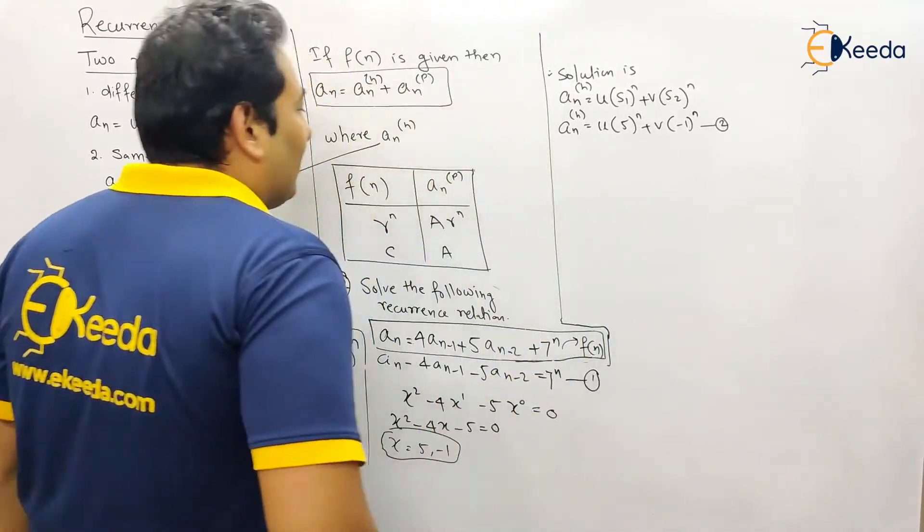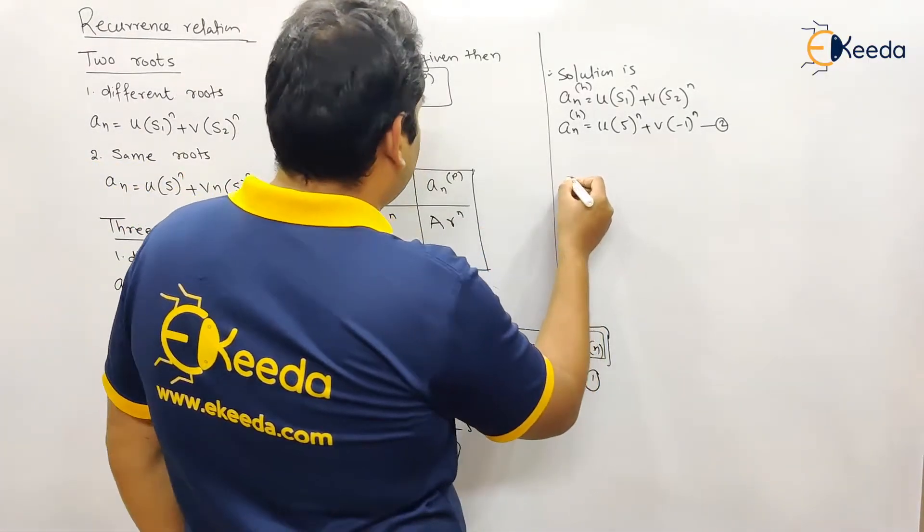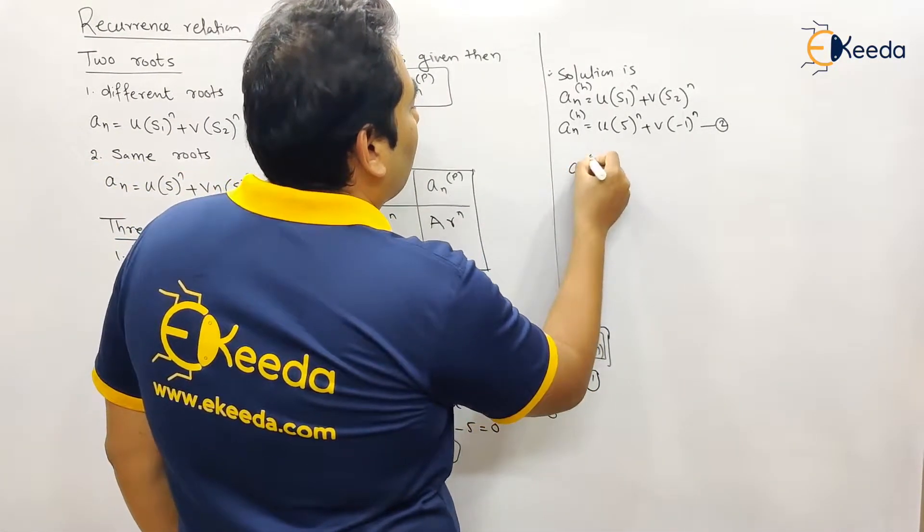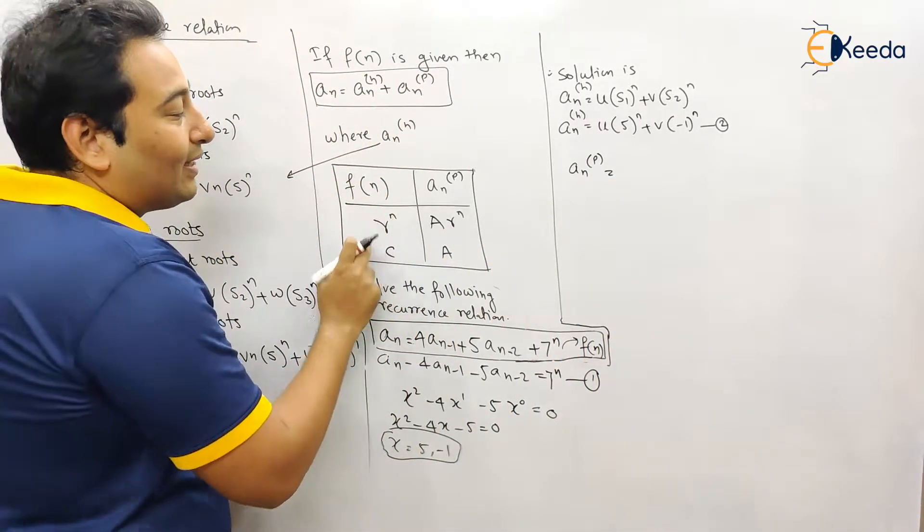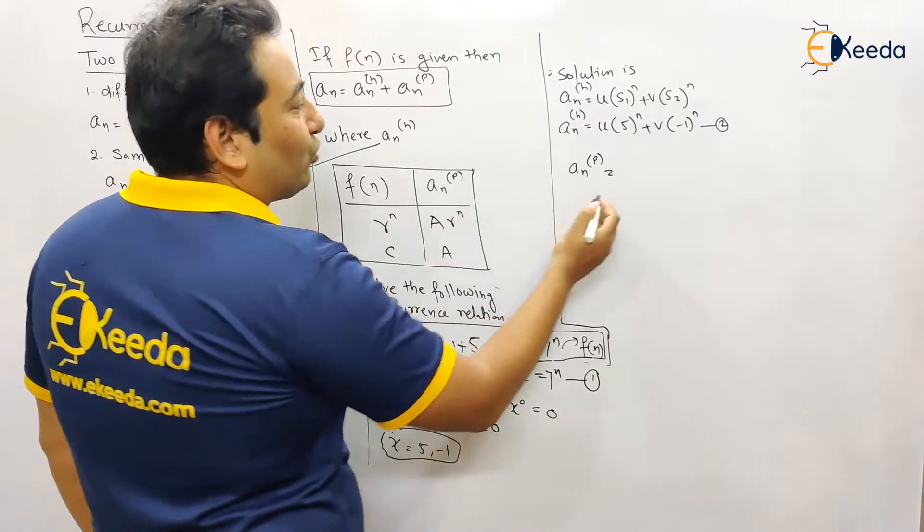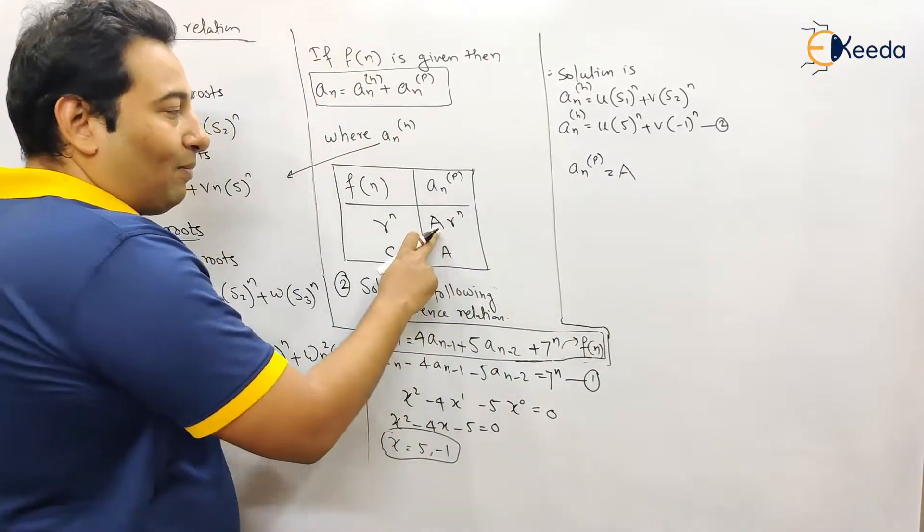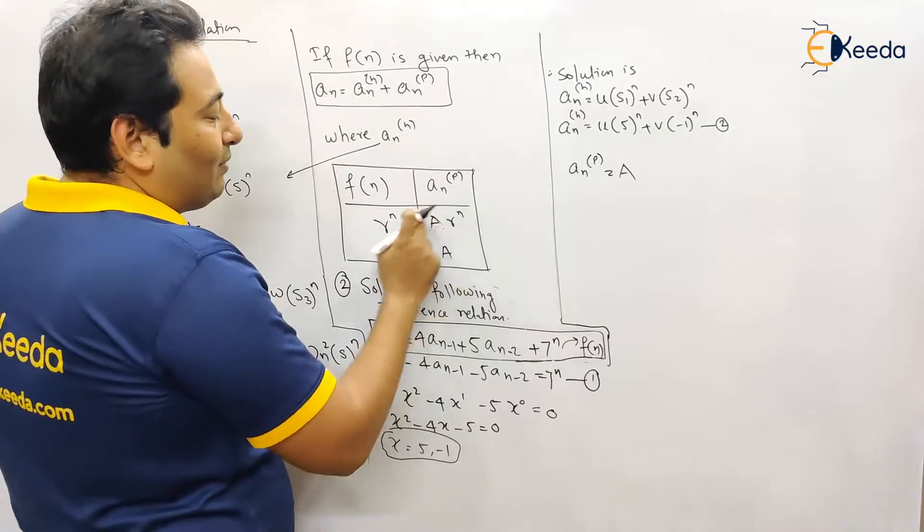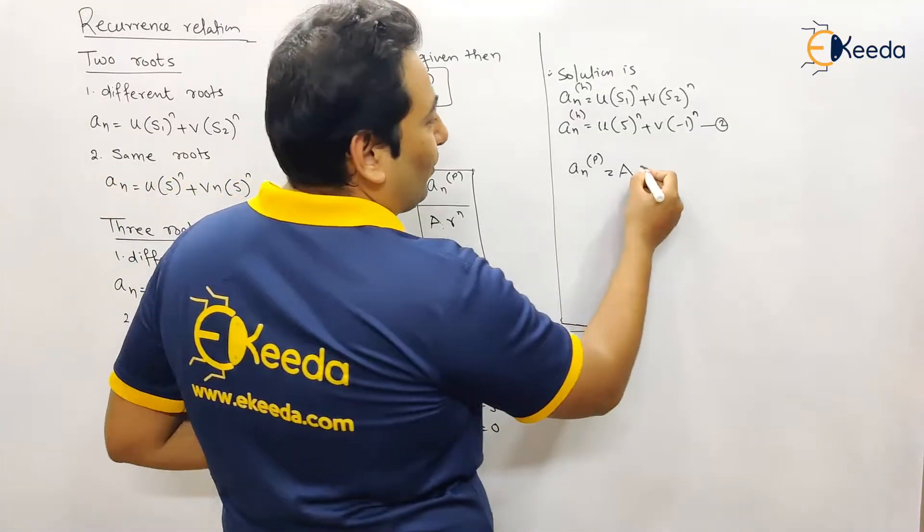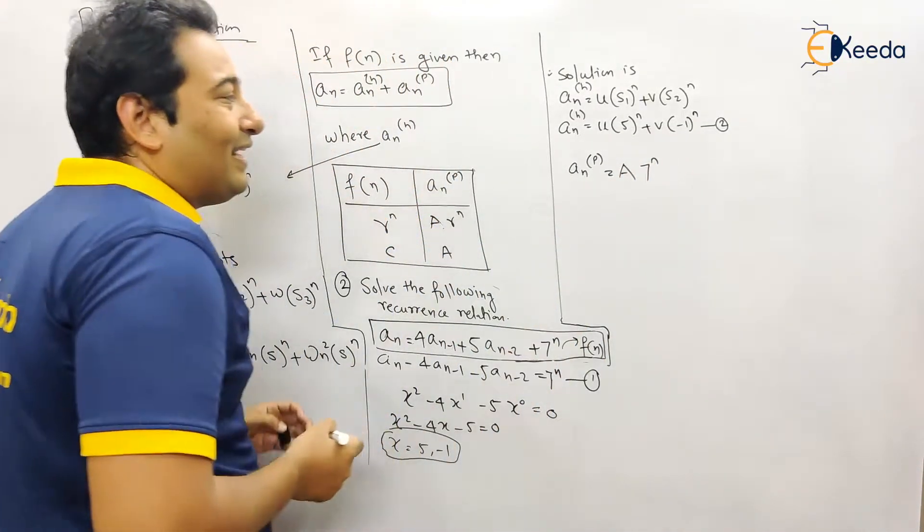Now we will find out a_np. So here a_np depends upon your function. Here it is r raised to n. So a_np is a·r raised to n. So a is from our side and r raised to n will remain as it is. r raised to n means the function, that is seven raised to n. So this is my a_np.